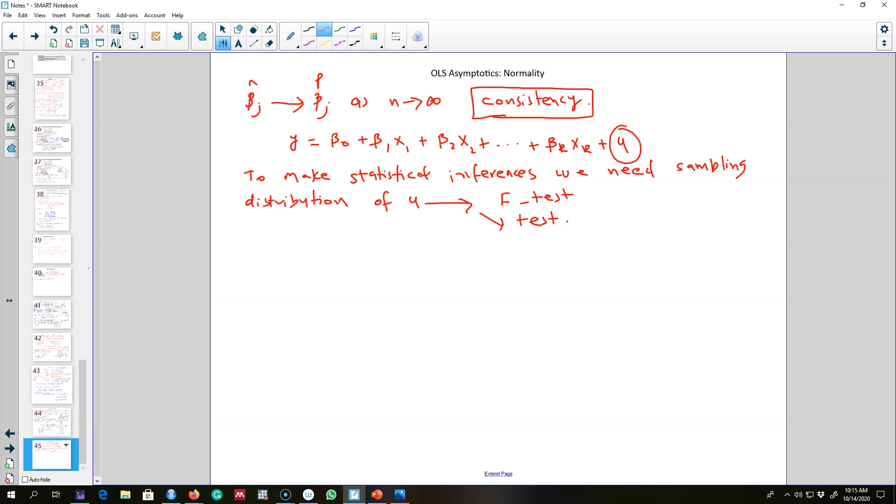Normality will help us to know more about the sampling distribution of this error term. What normality implies is that a variable is normal when it is symmetrically distributed around its mean value. If a variable is normally distributed we'll get this normal bell-shaped curve. Sigma is the standard deviation of this distribution, and this is two times standard deviation.